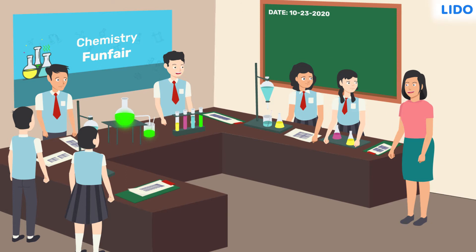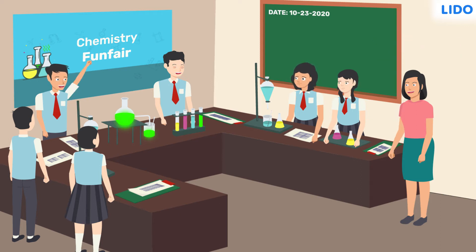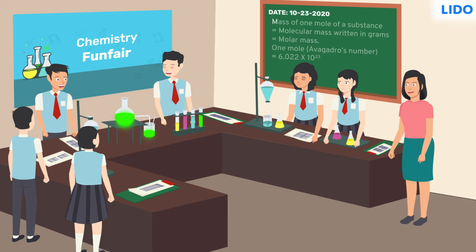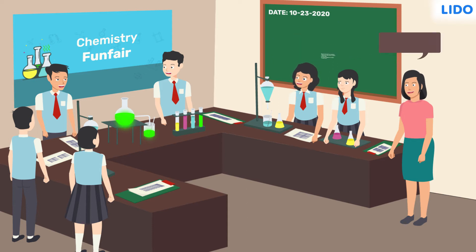Rina ma'am asks, 'But can you tell what this mole concept is?' Sachin is ready with the answer. According to the mole concept, the mass of 1 mole of a substance is equal to the numerical value of its molecular mass in grams. And 1 mole of a substance represents 6.022 × 10²³ molecules. This number is also called Avogadro's number. 'Perfect!'